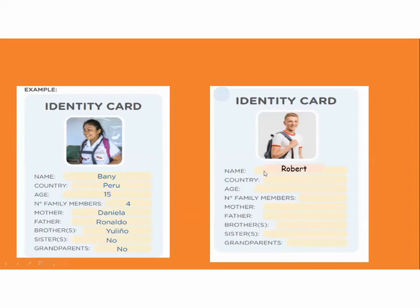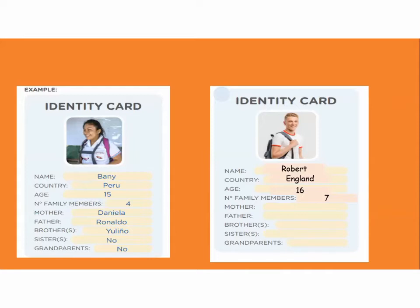¿De qué country nos dijo que es Robert? De Inglaterra. 16 años. ¿Cuántos miembros son? Seven — porque arriba en el árbol tenía cuatro abuelitos, luego venía su mamá, su papá y él. Su mamá se llamaba Lucy. No tiene hermano.